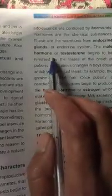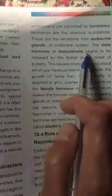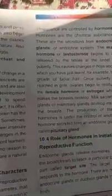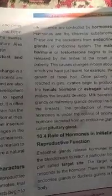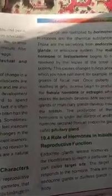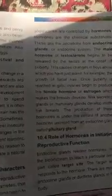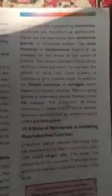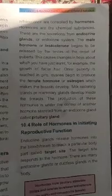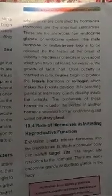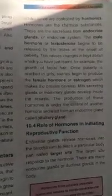The male hormone testosterone begins to be released by the testes at the onset of puberty. Testosterone is released by the testes at the time of puberty, and this causes changes in boys such as the development of secondary sexual characters.